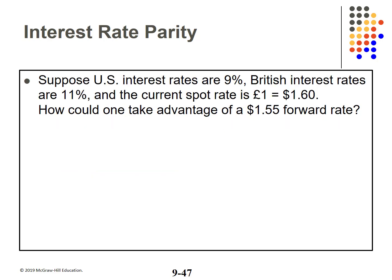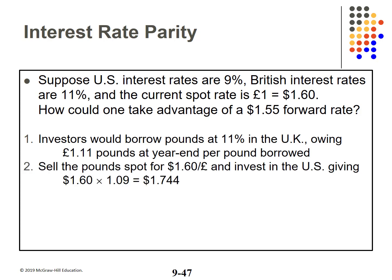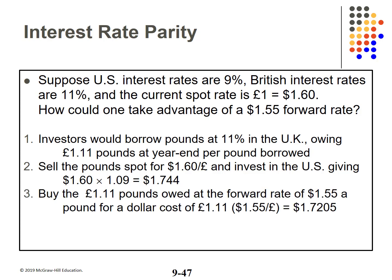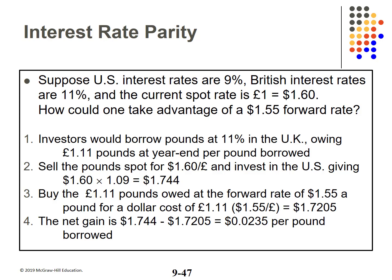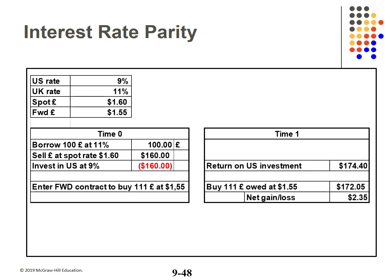Continuing with interest rate parity: suppose the US rate is 9%, the UK rate is 11%, the spot rate is $1.60 to the pound, but the forward rate is $1.55. You could borrow pounds in the UK at 11%, sell them in the spot market for $1.60 to the pound, and invest in the US at 9%. Then buy 1.11 pounds owed at the forward rate of $1.55 a pound — cost will be $1.7205. Net gain: $0.0235 per pound borrowed. Using 100 pounds, this recaps the arbitrage example. This ends Chapter 9.